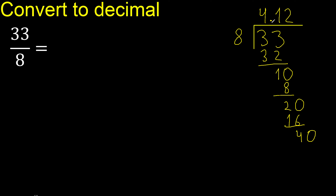Complete. Point is here. 40: 8 multiplied by 5 is 40. 40 minus 40 is 0. Finish.